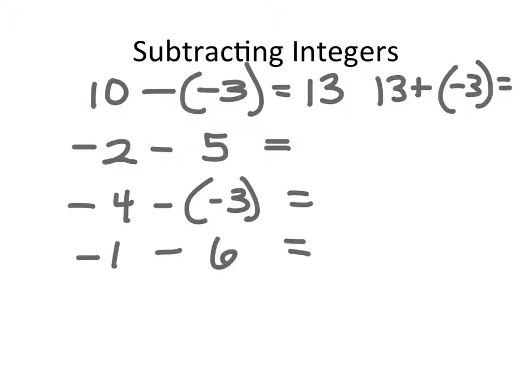In the next problem we have negative 2 — that means we're short 2 things. We're going to take away 5 more. If we're already short 2 and we take away 5 more, we're going to be short 7. And if I do my reverse operation, negative 7 plus 5 will equal negative 2.